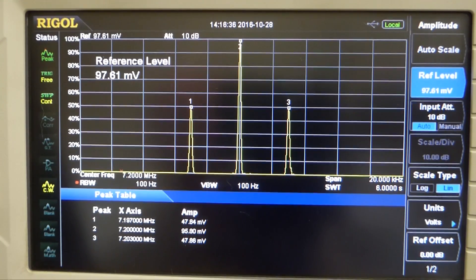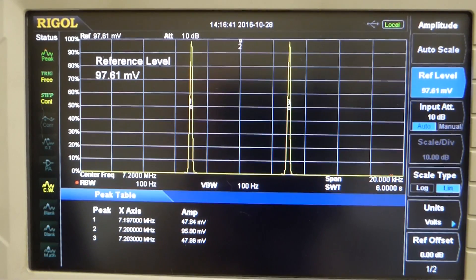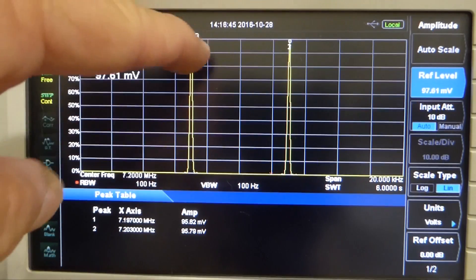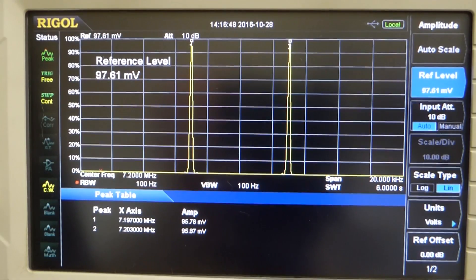And here we go with the double sideband suppressed carrier. The carrier is gone and all the energy is now in these two sidebands and they're up near 100% here.